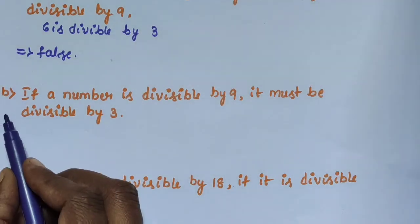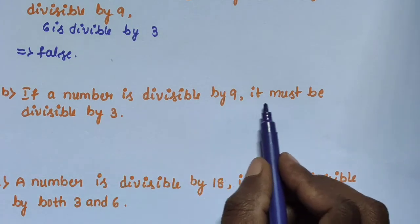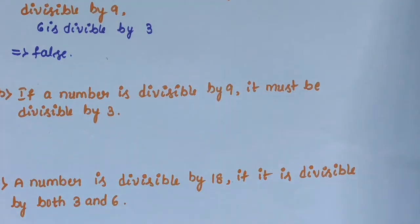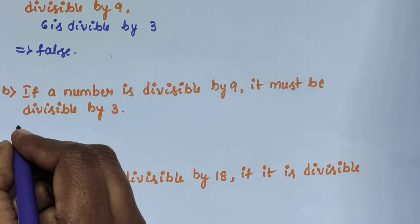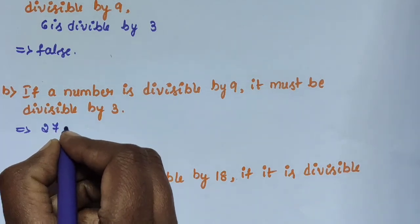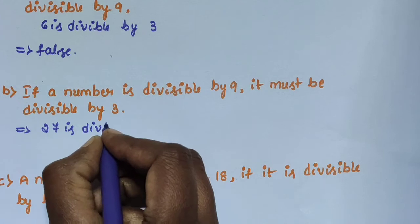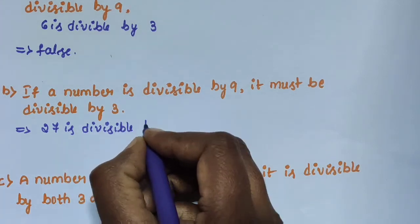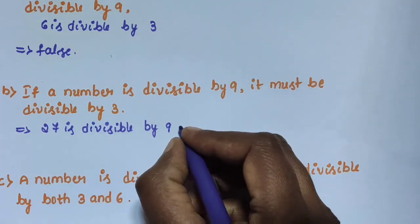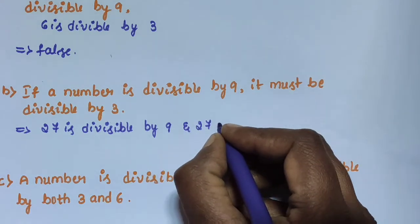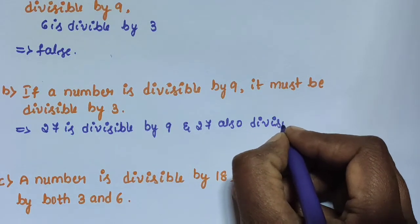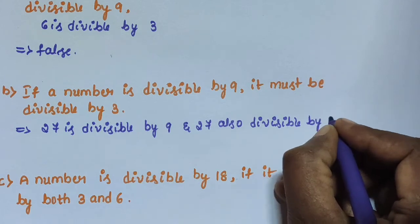Sub-question B: if a number is divisible by 9, it must be divisible by 3. This statement is true, because 27 is divisible by 9 and 27 is also divisible by 3.